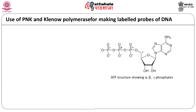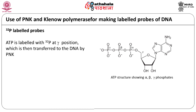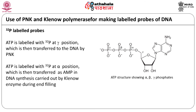An application of polynucleotide kinase and Klenow polymerase is to label DNA at the 5 prime end. This is important in preparing probes used for detecting a specific gene in transgenic plants. Gamma-labeled ATP is used with polynucleotide kinase and the labeled phosphate is transferred to the 5 prime end of DNA. Klenow enzyme, which is used for end filling of overhangs created by restriction enzyme digestion, can also be used for making labeled probes. In this case, the alpha phosphate in ATP is labeled, which is inserted into the DNA as AMP during DNA synthesis.